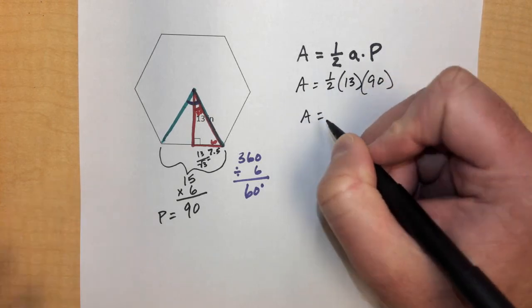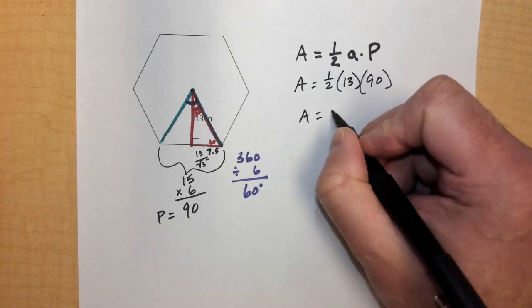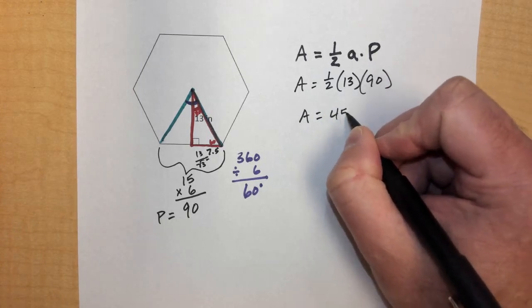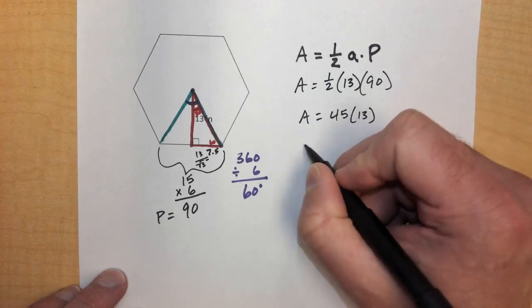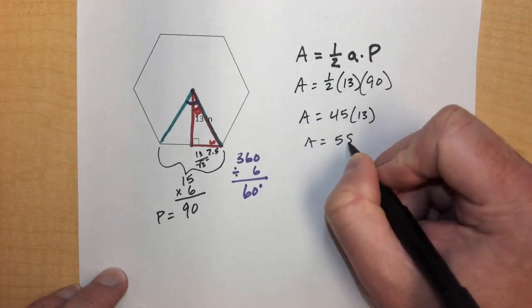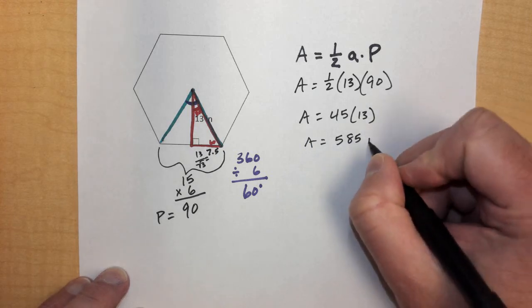Then the area is going to be 1 half of 90, which is 45, times 13, and we find that our area, in this case, is 585 square inches.